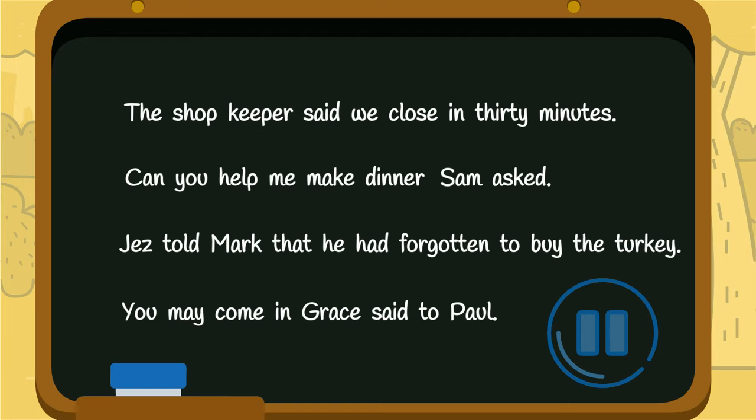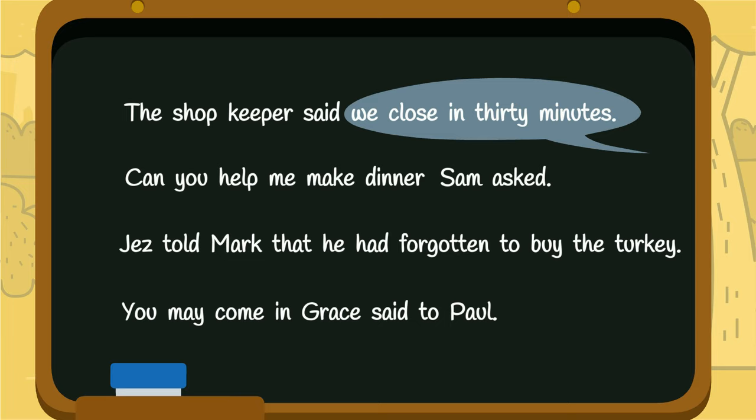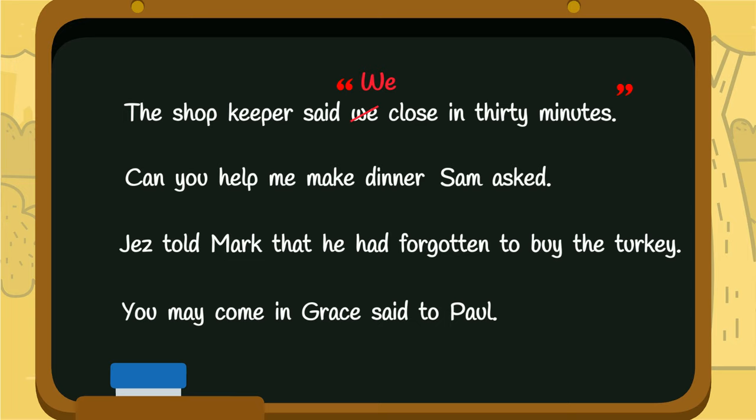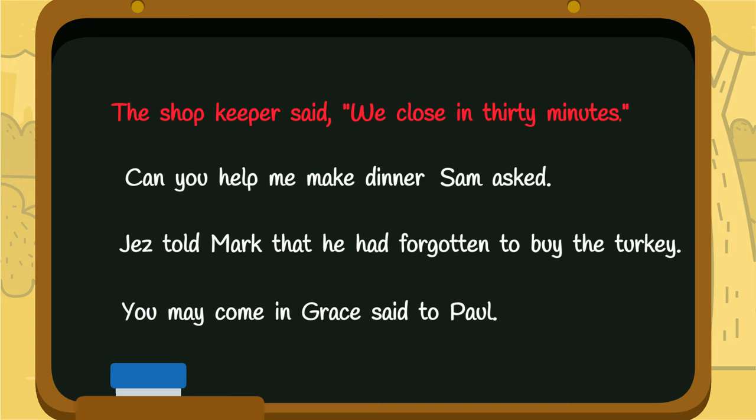The first sentence: here is the direct speech. Let's add in our speech marks, then we need to add a capital letter to the beginning of the direct speech. Finally, a comma is needed between the speaker and the direct speech. The second sentence: here's the direct speech, and so our speech marks go here. There is a question in the direct speech, and so we must use a question mark, and it must go inside the speech marks. A comma isn't needed because of the question mark.